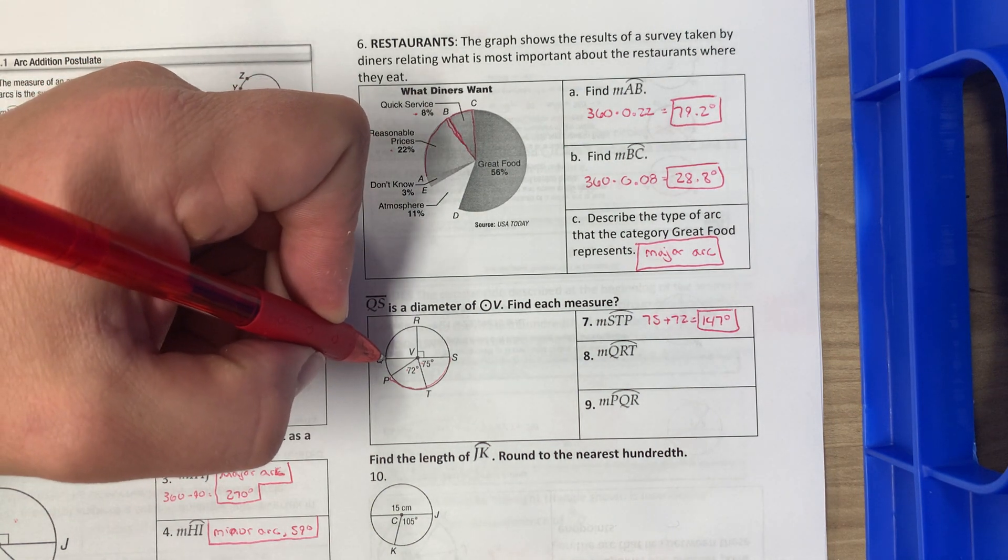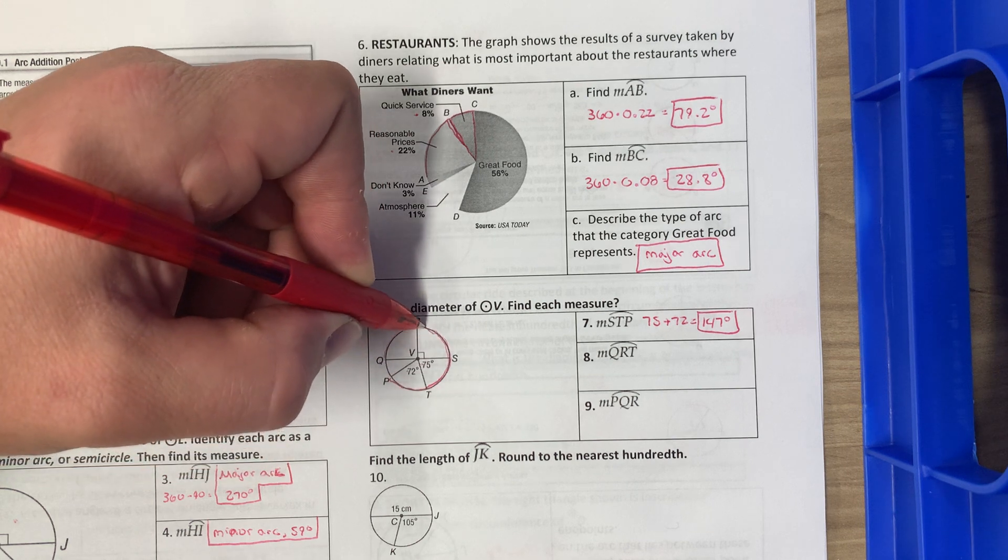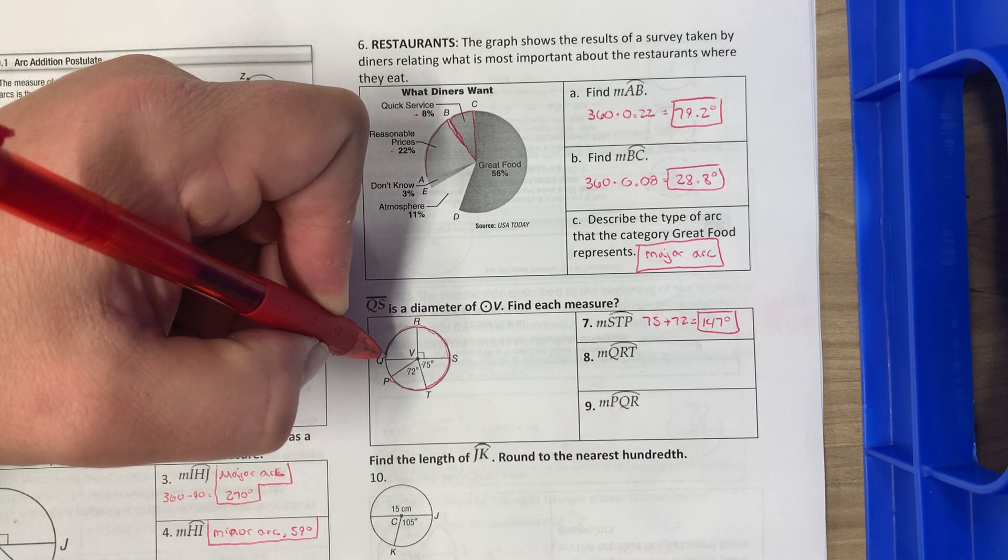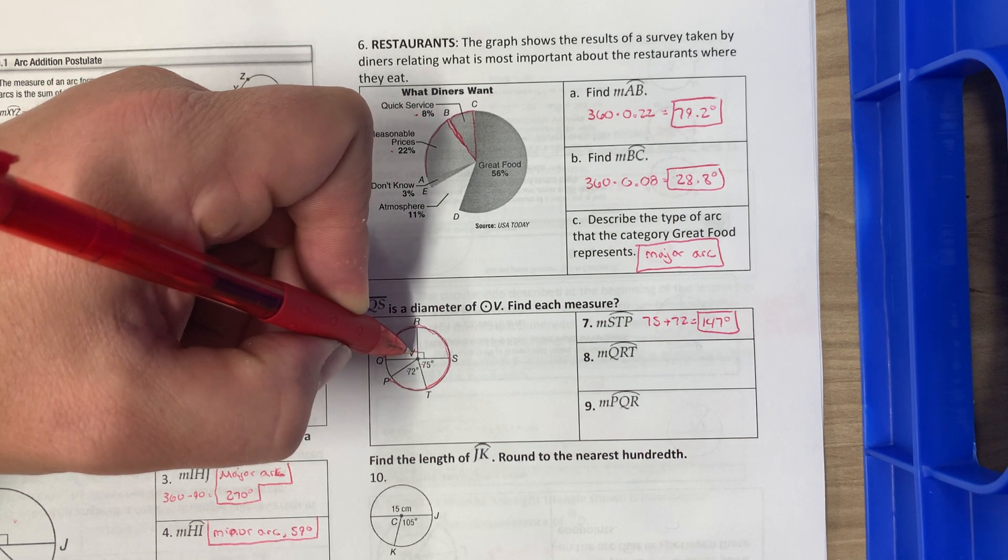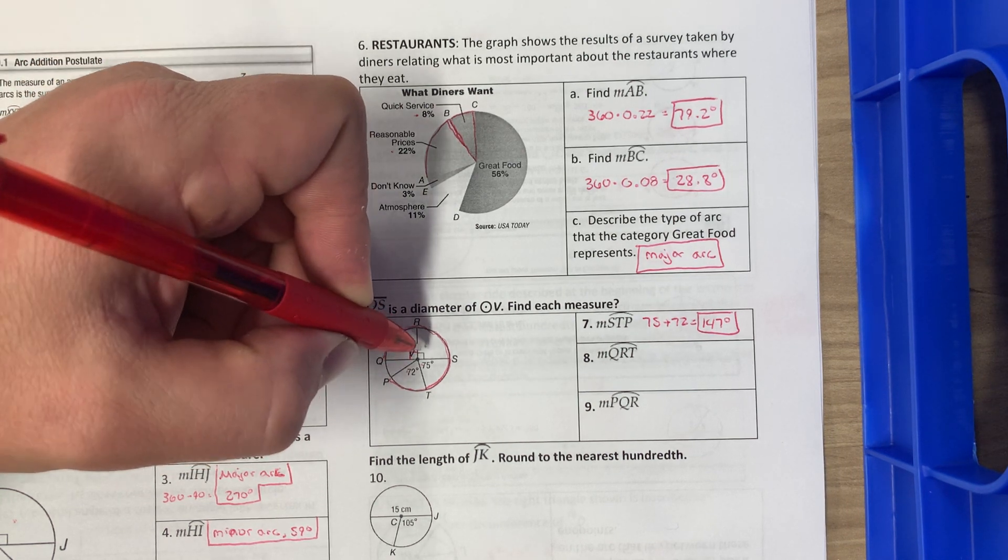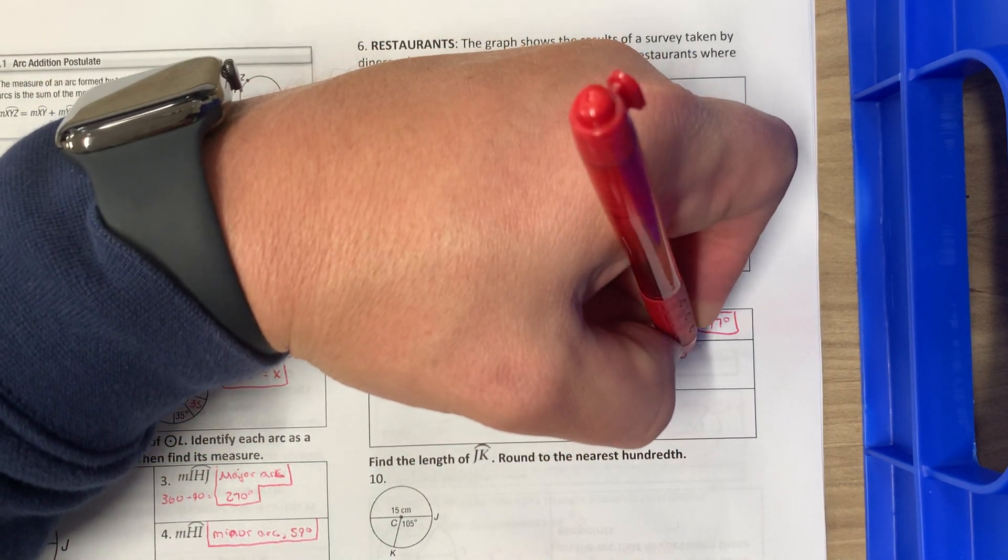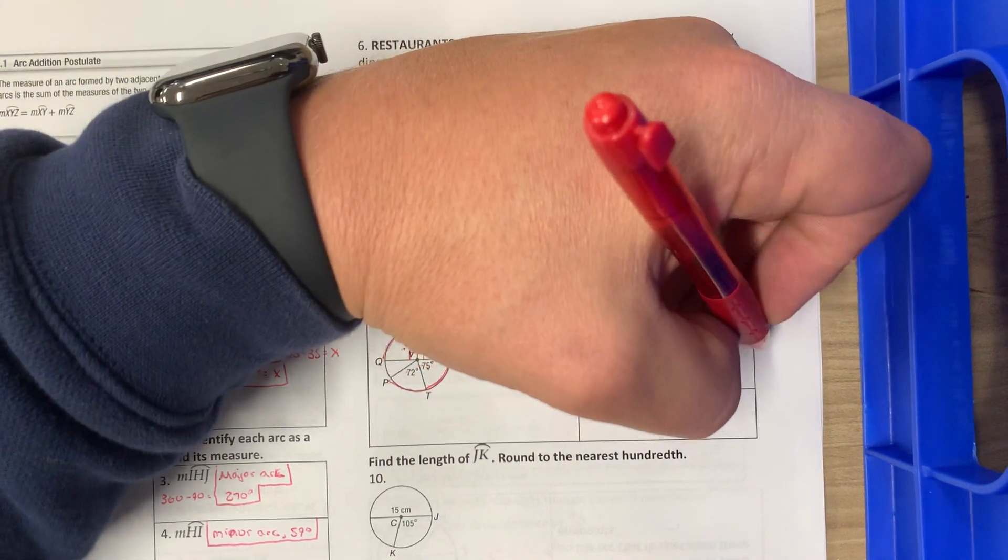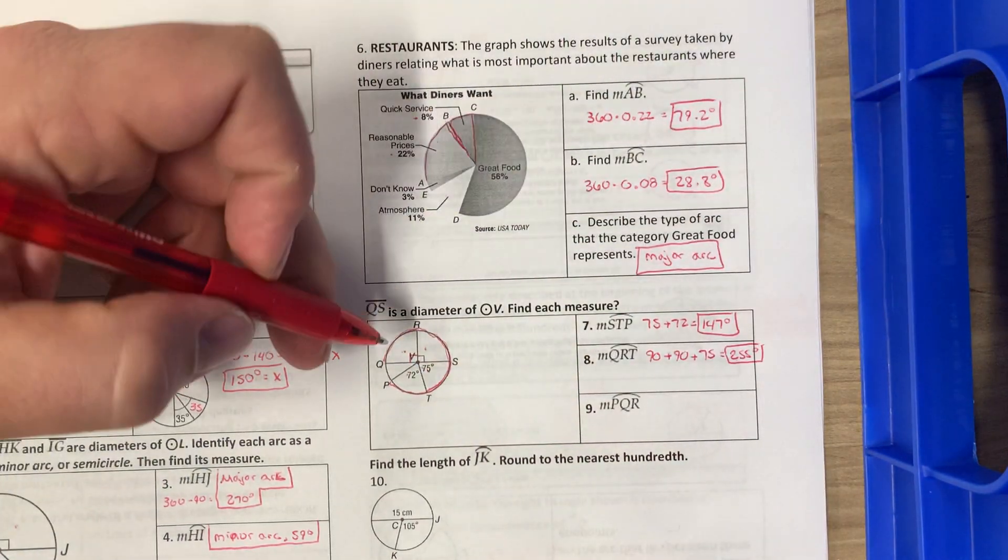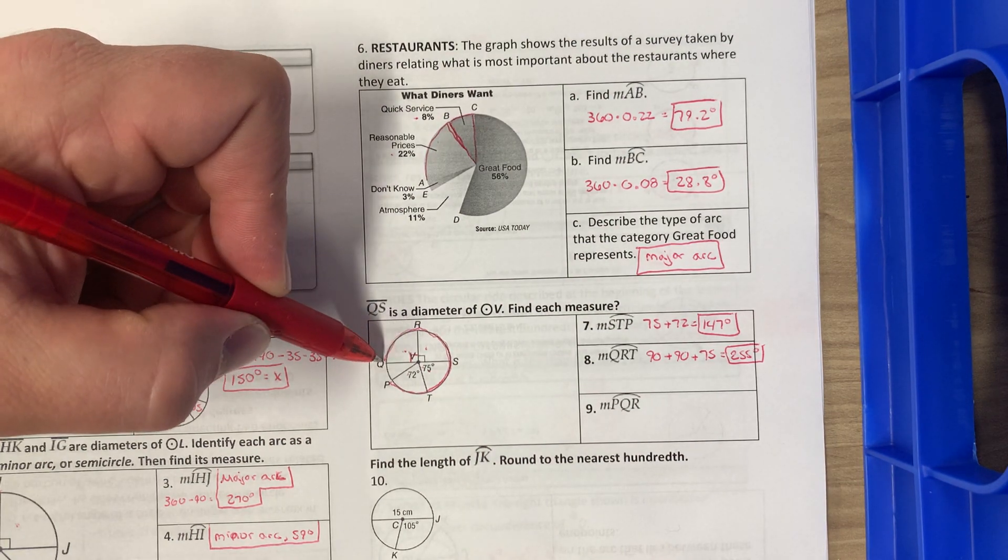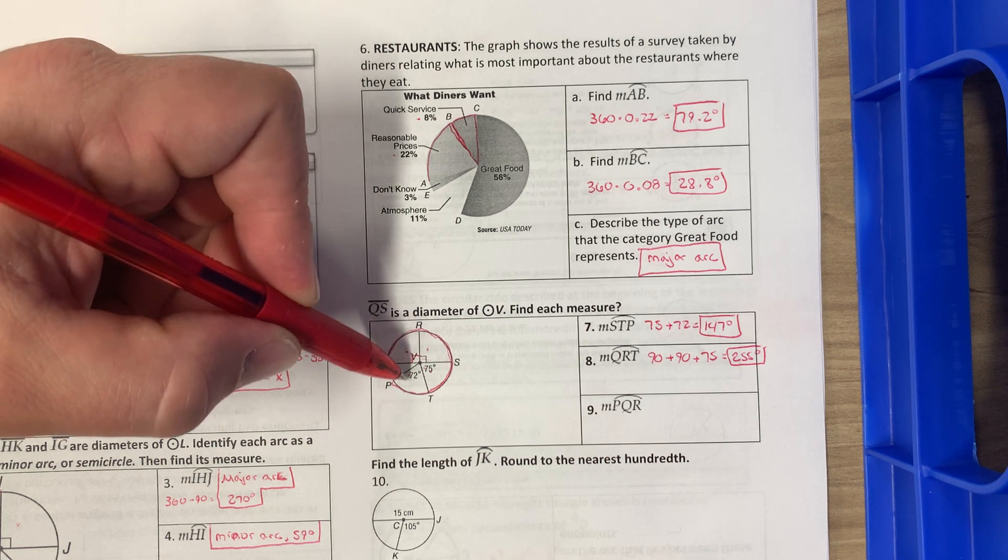QRT is going to be here all the way around to right here. So what I did for QRT, I did 90 plus 90 plus 75, and that is going to equal 255 degrees. And the reason I know this is 90 right here as well is because this is a semicircle. It tells me QS is a diameter, so it cuts the circle right in half.